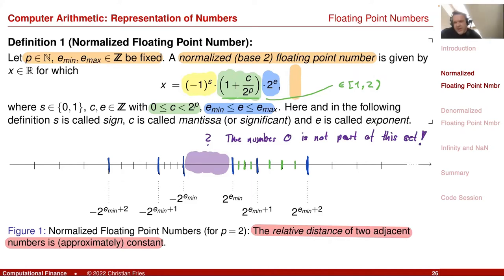There is a large gap here, and more striking — zero is not part of the set of normalized floating point numbers. Zero is an important number to represent in a computer, so we have to fix this.